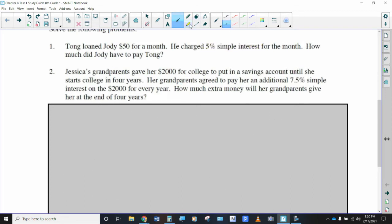Let's do a second one. Jessica's grandparents gave her $2,000 into a savings account until she starts college in four years. Her grandparents agreed to pay an additional 7.5% simple interest every year. And it looks like she's got four years before she will need that money. So if I equals PRT, we don't know how much interest she's going to make. We know the principal was the $2,000 that the parents put into the account. The interest rate that they're offering is 7.5%. And the time period is four years.